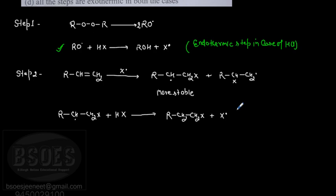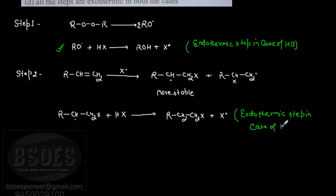Similarly, in the case of HI (hydrogen iodide), the second step - the chain propagation step where the X free radical adds to the alkene - that step is endothermic. So in the case of HI, it is the propagation step that is energetically unfavorable.